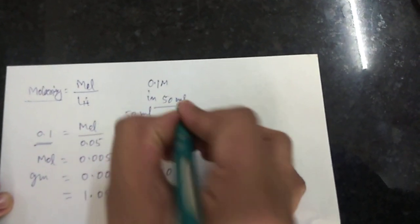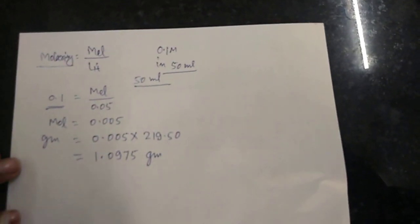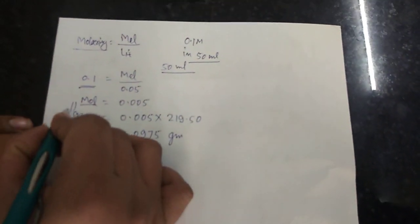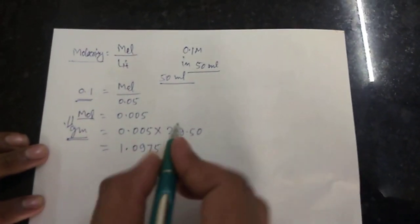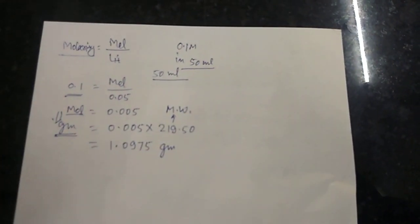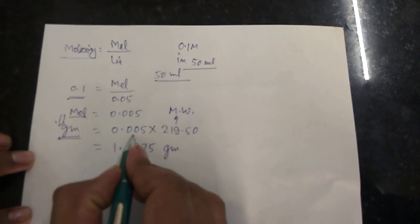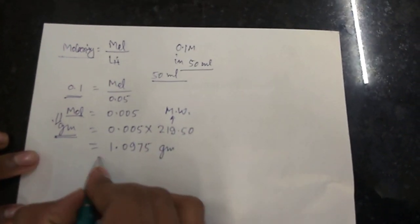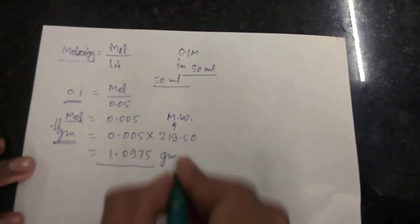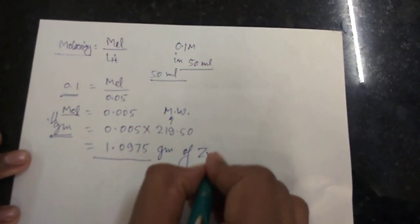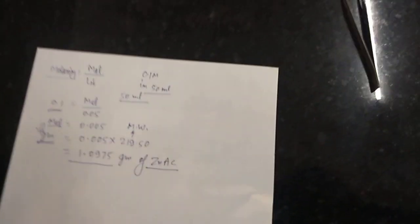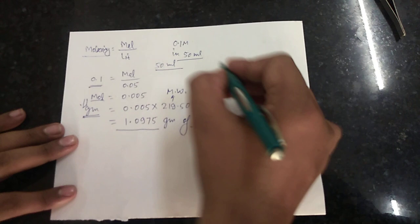To convert moles into grams, we multiply by the molecular weight. The molecular weight of zinc acetate is shown in the box. Multiplying the number of moles by the molecular weight gives 1.0975 grams — this is the amount of zinc acetate required to make a 0.1 molarity solution.